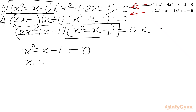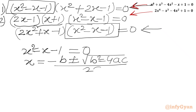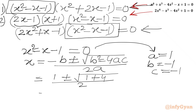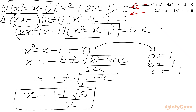Applying the quadratic formula with a = 1, b = -1, c = -1: x = (-b ± √(b² - 4ac)) / 2a = (1 ± √(1 + 4)) / 2 = (1 ± √5) / 2. We are getting the golden ratio! So our common roots are (1 + √5)/2 and (1 - √5)/2.